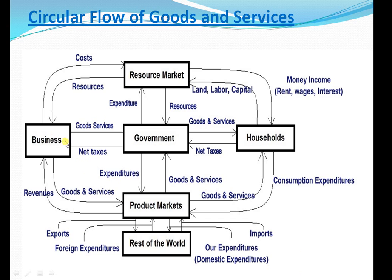Businesses produce goods and services using resources collected from the resource market. These final goods are sold in the product market, and in return businesses gain revenues. With their earnings, households buy goods and services from the product market and incur consumption expenditures.